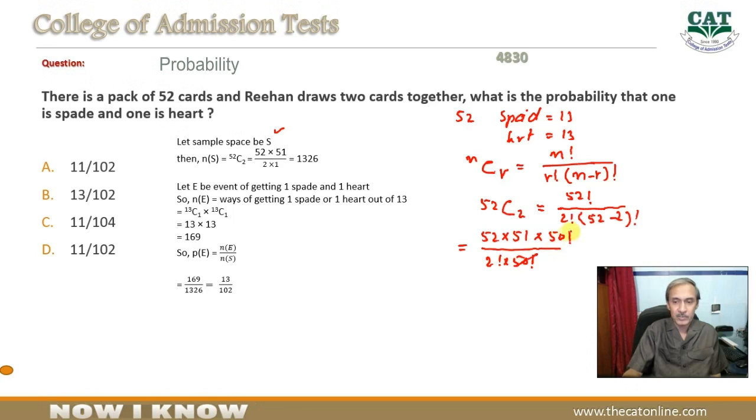Ab yeh 50 factorial is se cancel ho jayega to aap ke paas bachta hai 52 into 51 over 2 into 1 aur yeh equal hota hai 1326 ke.